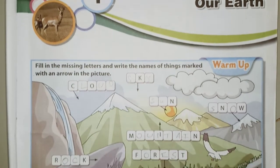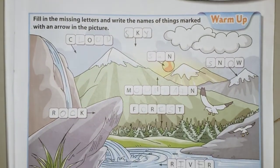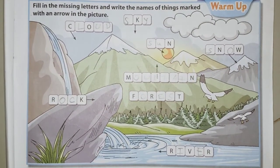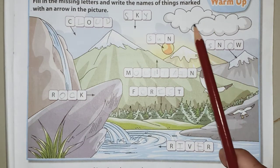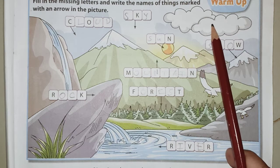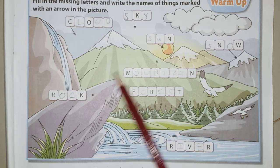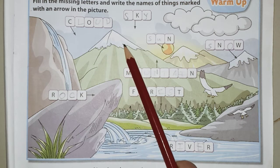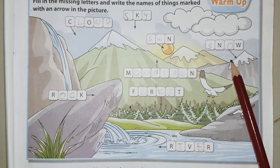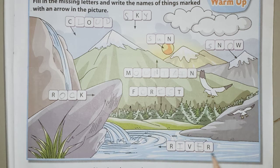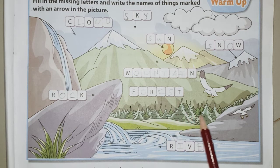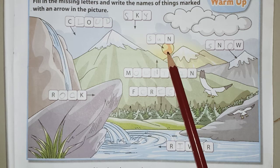On the same page, can you see one picture? You have to guess what is shown in the picture. Can you see the clouds here? This is a mountain. On top of the mountain, can you see the snow? Here is a river, a rock, and there is a forest at the foothill of the mountain. This is the sun.